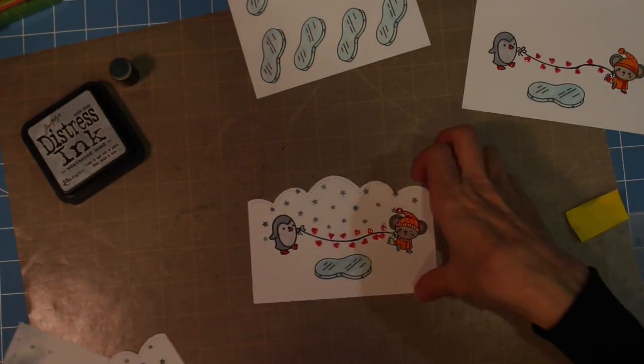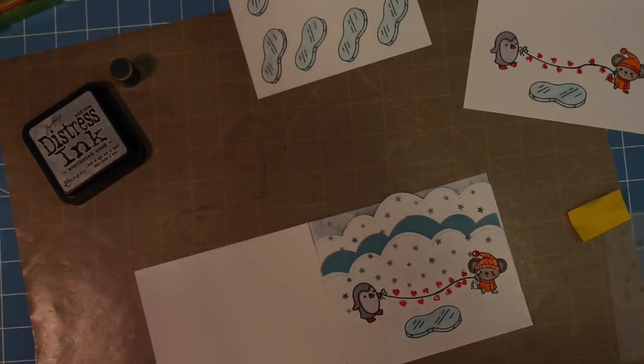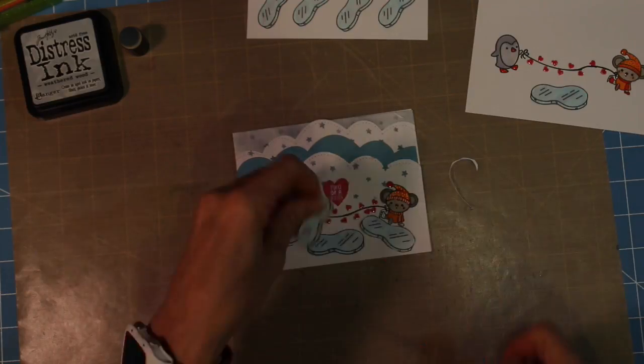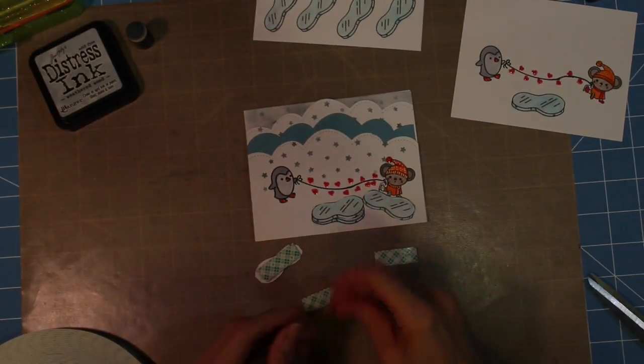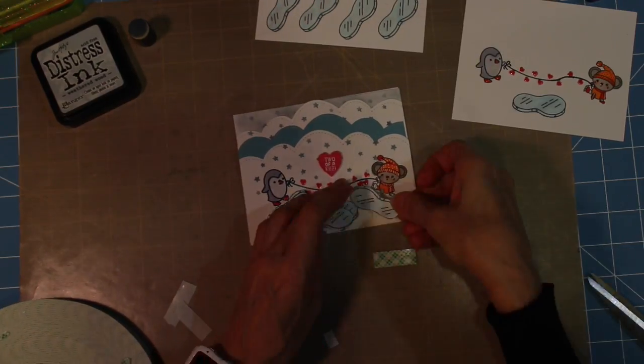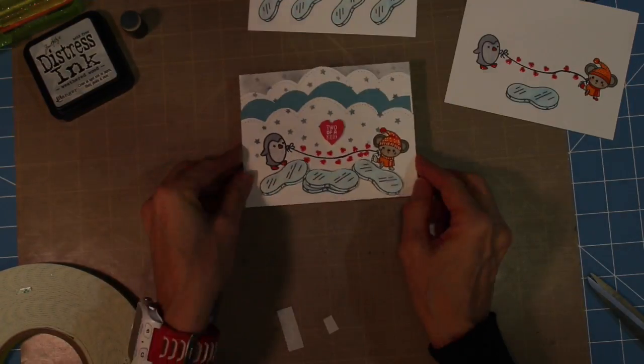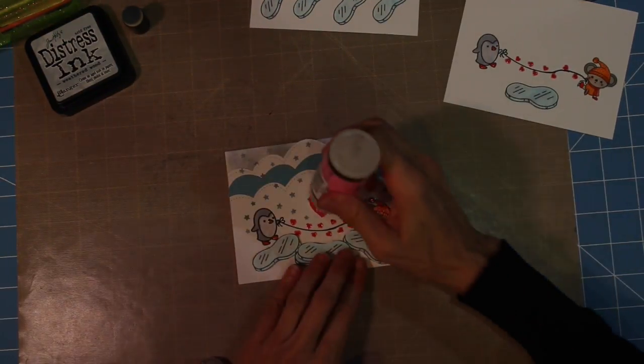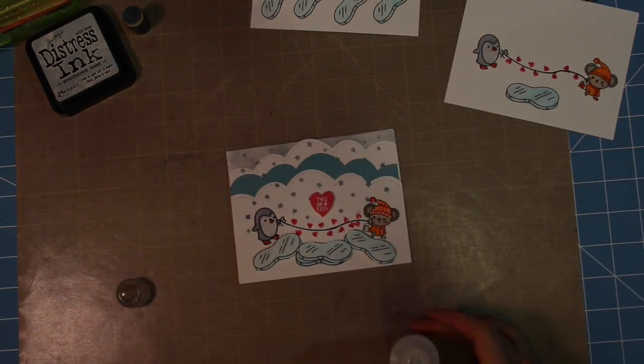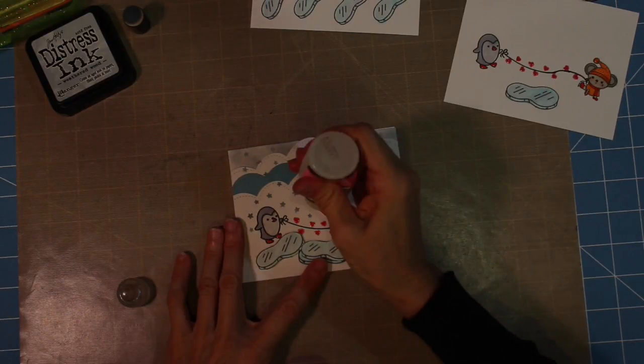I have almost all the pieces done now. I'm going to cut out the icebergs and the heart and start assembling them onto the top of my panel on my card. I'm just kind of figuring out where I want to lay them and using some foam tape to add some dimension to the extra pieces of the iceberg and the heart. I get them assembled under the critters and finish that piece of it.